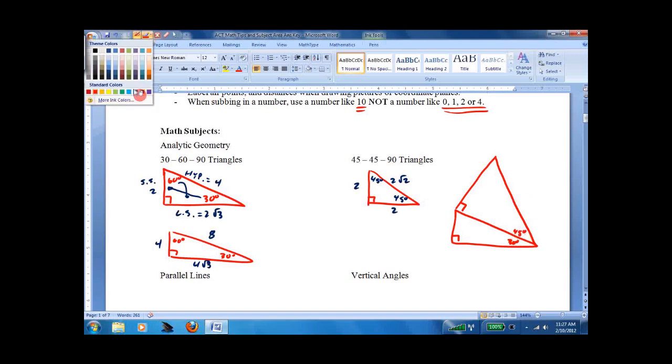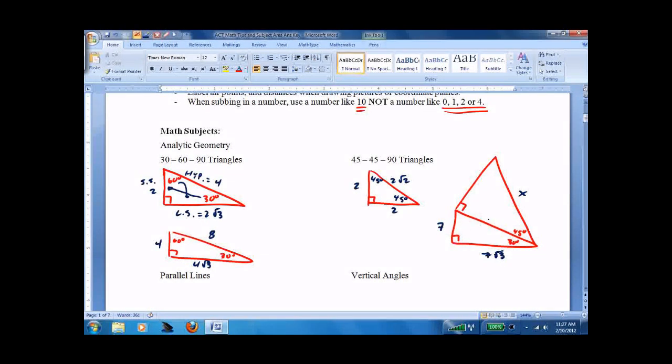They'll say, and they'll put letters on that, but this side is seven root three. What's X? And what they want you to do is say, well, this is seven root three. That makes this seven. That makes this 14. Also makes this 14, but I don't really care. Therefore, X is 14 root two. And that's it.